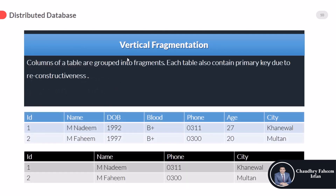In vertical fragmentation, columns of a table are grouped into fragments. Each fragment also contains the primary key for reconstructiveness. Vertical fragmentation means selecting only specific columns. For example, suppose we have a table with columns id, name, and dob — using vertical fragmentation we can select only specific columns such as id, name, phone, and city.